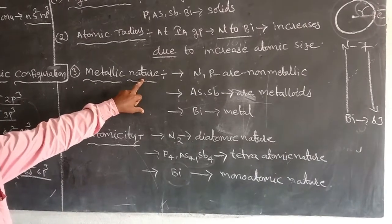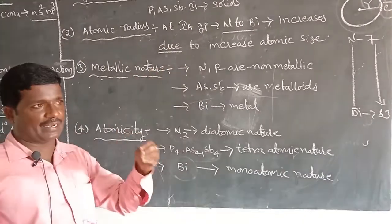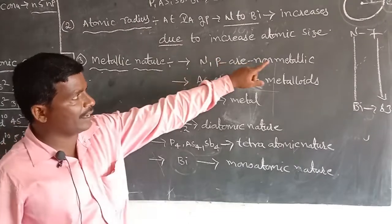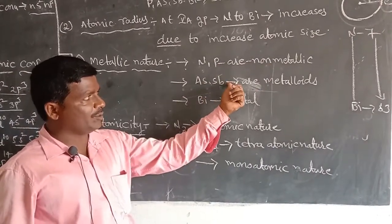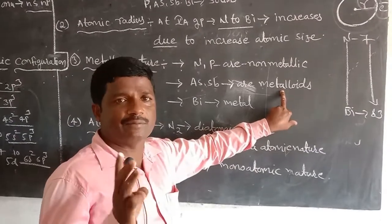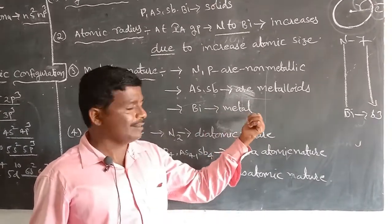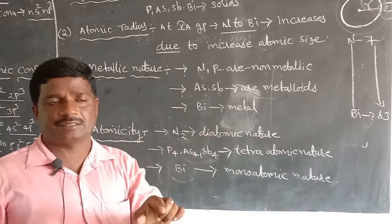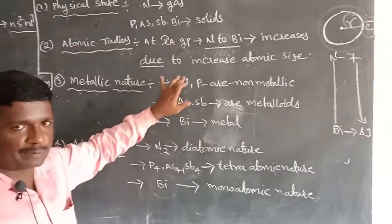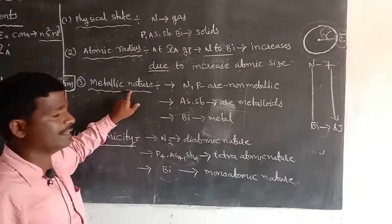Regarding metal nature: metals lose electrons while non-metals gain electrons. In Group 5A elements, nitrogen and phosphorus are non-metals. Arsenic and antimony are metalloids — they exhibit both metallic and non-metallic nature. Bismuth is a metal, as it loses electrons. In any group, from top to bottom, non-metallic nature decreases and metallic nature increases.